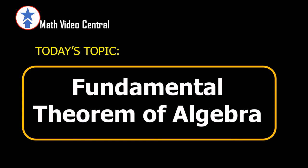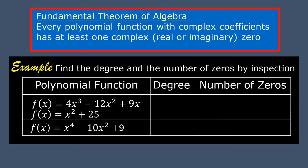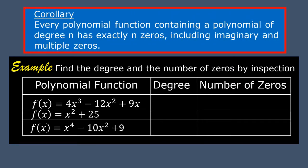Today's topic: Fundamental Theorem of Algebra. According to the Fundamental Theorem of Algebra, every polynomial function with complex coefficients has at least one complex — real or imaginary — zero. A corollary states that every polynomial function of degree n has exactly n zeros, including imaginary and multiple zeros. This means the degree is equal to the number of zeros.